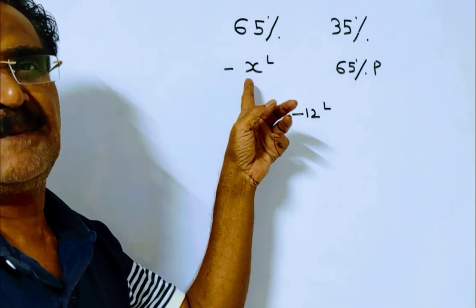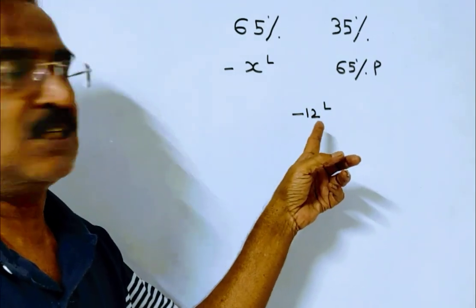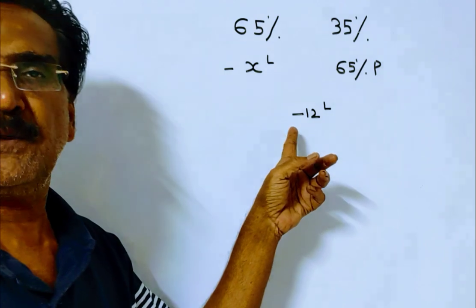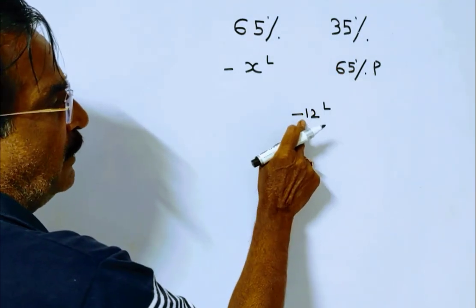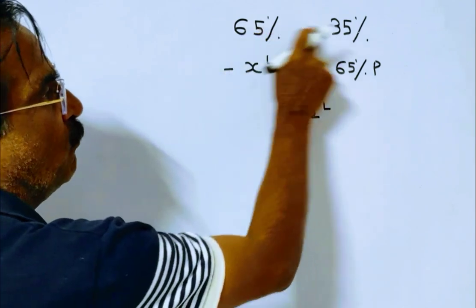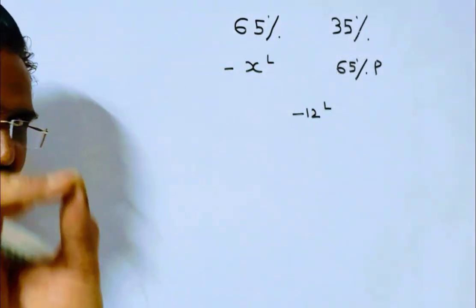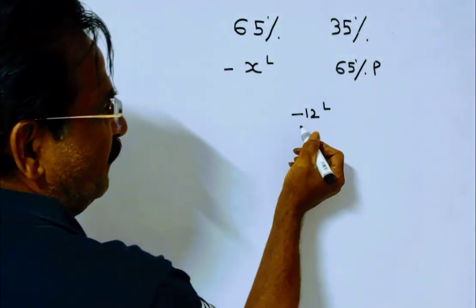Overall there is also loss, so here I have also put a minus sign. Now, this minus this upon this minus this equals the quantities ratio. That is the rule of allegation: 65 minus (-12), which is 65 plus 12, equals 77, upon (-12) minus (-x), which is x minus 12.